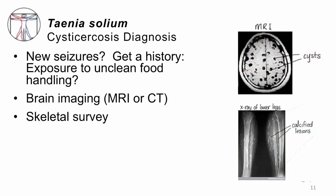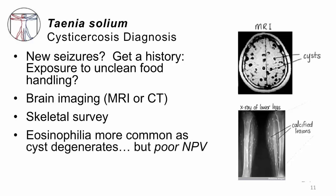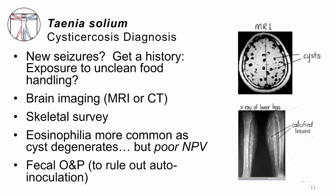In the case of cysticercosis, the history is: have you recently had new onset of seizures? If so, has there been exposure to unclean food handling, or has someone preparing your food come from a highly endemic area? Regardless, you'll image the brain — MRI is probably the best, though CT scan can also show the cysts. We can also do a skeletal survey looking for calcified cystic lesions in the muscles. These patients are more likely to have a high eosinophil count, which usually happens as the cyst breaks down and exposes antigens to the immune system. However, the negative predictive value is poor — plenty of people with cysticercosis have a normal eosinophil level. You can also check fecal ova and parasite, since some people with teniasis will auto-inoculate by contaminating their own food.